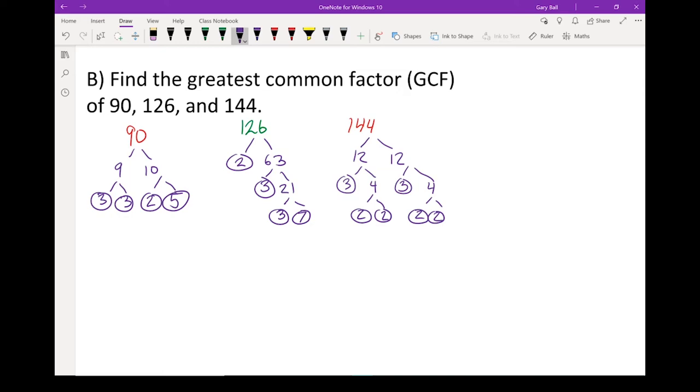Now that I've got that, I'm going to write them out as a product of their prime factors. Notice how I put the factors in order from smallest to largest. I've counted each one to make sure I've got the correct number of factors, because if you miss a factor, it throws everything off.